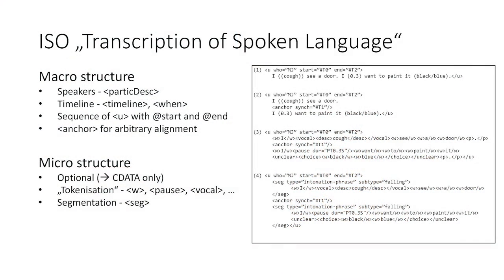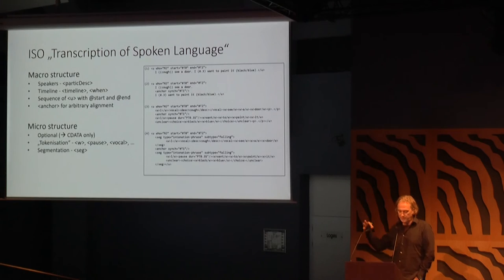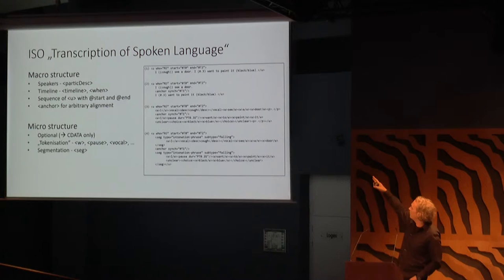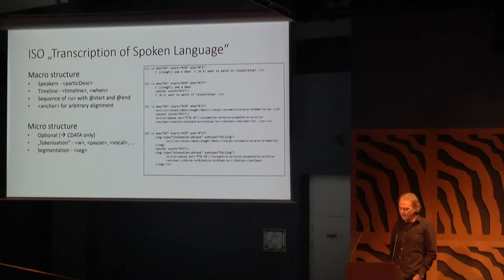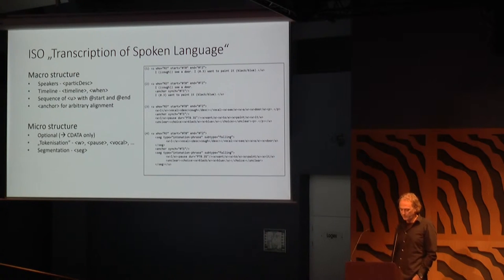What does it look like for the macro structure? We simply took the elements that the TEI guidelines already define. You have speakers, you have a timeline, and the main structure is a sequence of U elements with start and end points, and you can have additional anchors inside the utterances for arbitrary alignment of arbitrary chunks of your transcription. Underneath that you can have microstructure — you can simply put character data underneath, or have additional structure and most importantly tokenization, meaning word segments, pause segments, vocal segments.